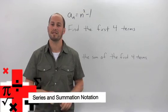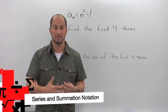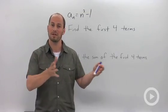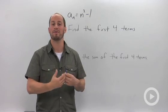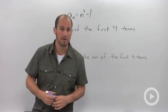A series is just the summation of a sequence. A sequence is just a bunch of numbers in a row. A series is what happens when we add up all those numbers together.